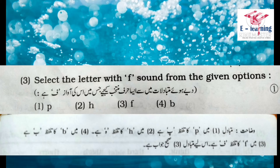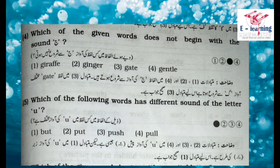Select the letter with 'f' sound from the given options. دیے ہوئے متبادلات میں ایسا حرف منتخب کیجیے جس میں 'f' کی آواز ہو۔ Options: P, H, F, B. Explanation: متبادل ایک میں P کا تلفظ 'puh' ہے، متبادل دو میں H کا تلفظ 'ha' ہے، متبادل چار میں B کا تلفظ 'buh' ہے، متبادل تین میں F کا تلفظ 'f' ہے، اس لیے متبادل تین صحیح جواب ہے۔